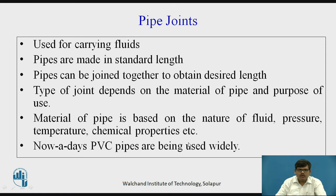Most importantly, the chemical properties of that particular fluid play a major role in affecting the material of the pipe. So pressure, temperature, and chemical properties are the criteria you need to take into consideration before selecting the material of the pipe. Nowadays, as you all know, we are mostly using PVC pipes widely — that is, polyvinyl chloride pipes.